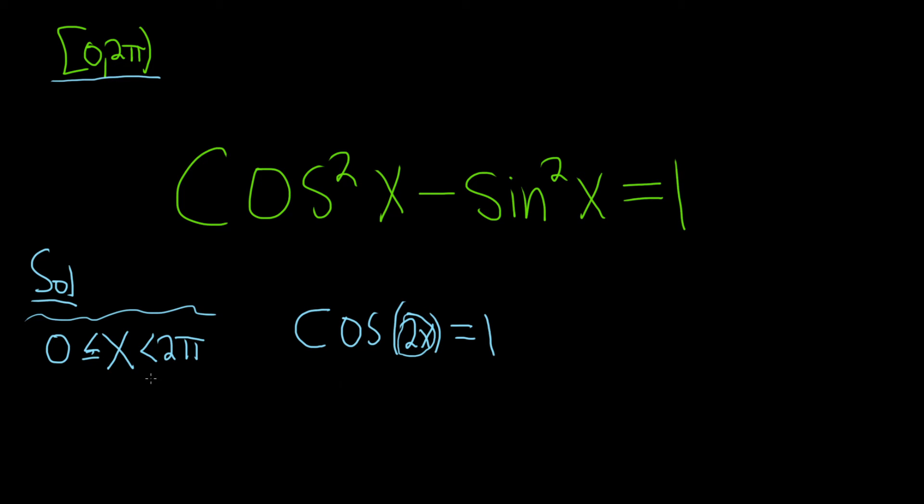And then what you do is you make this look like what's inside your trig function. So we have a 2x here, so now we're going to multiply everything by 2. So 2 times 0 is 0, 2 times x is 2x, 2 times 2π is 4π. So now we're thinking of, okay, what are all the answers between 0 and 4π? That's how it works.